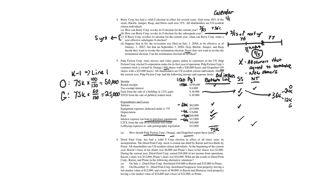Problem six: Dried Fruit Corp has had a valid S-corp election since incorporation — it was never a C-corporation. Stock is owned one-third by Raisin and two-thirds by Prune. At the beginning of the current year, Raisin's basis was $6,000 and Prune's basis was $2,000. During the current year, Dried Fruit Corp earned $36,000 of net income — Raisin's share is $12,000 (one-third) and Prune's share is $24,000 (two-thirds). In part A, Dried Fruit Corp distributed $16,000 cash to Raisin and $32,000 cash to Prune on July 1st.